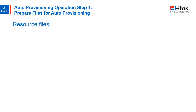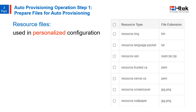Resource files are more used in the personalized configuration of specific customers. Before provisioning, you may need to edit and customize your resource files. You can see the usual file types and their file extensions, such as ring file, language file, wallpaper file, phone book file, etc. Resource files are optional, but if a particular feature is being employed, then the corresponding resource files are fundamental.